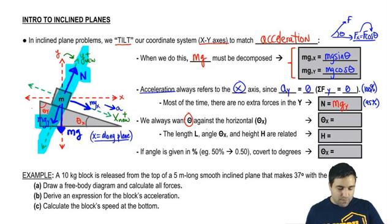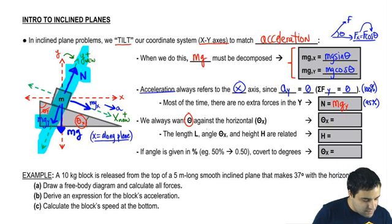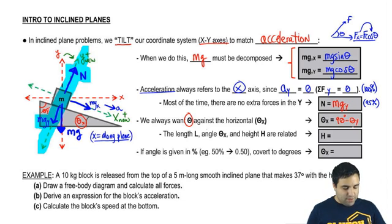We don't want that. We're going to get rid of it and find theta x. Theta x is just 90 minus theta y. So we always want the angle to be down there.